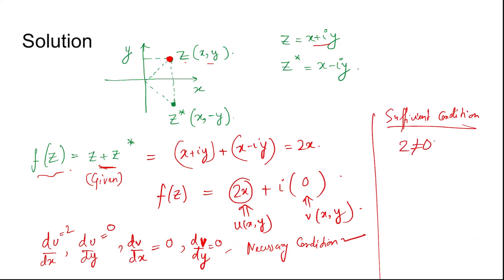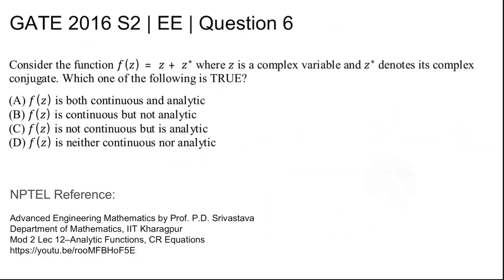So although we see that f(z) which is 2x is continuous everywhere, but it is not analytic everywhere. Therefore, the function f is continuous but not analytic. So option B is the correct option.